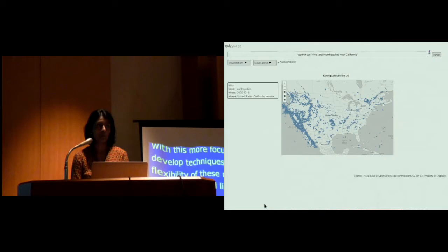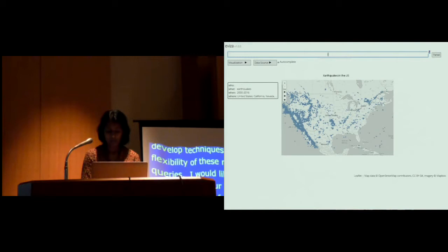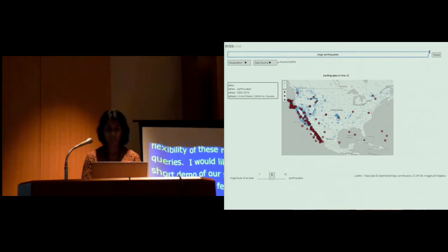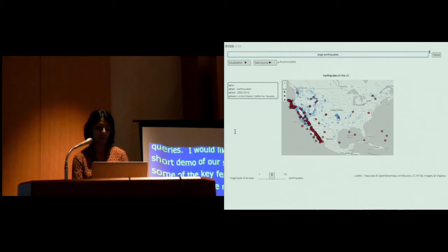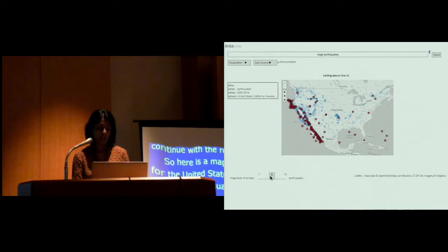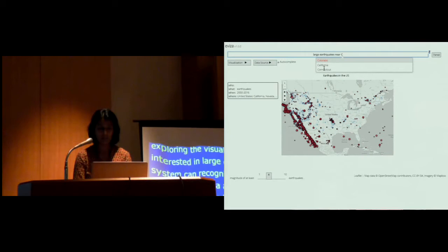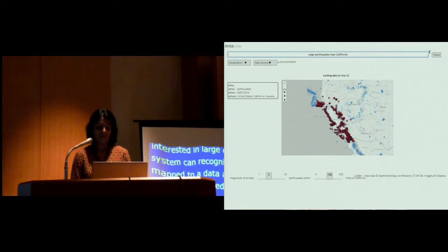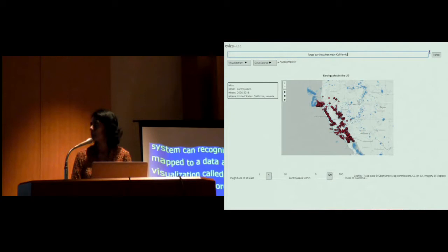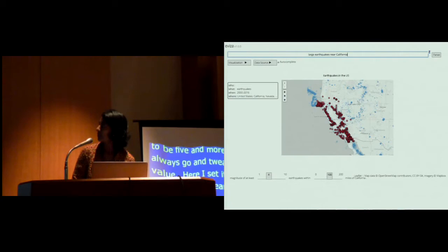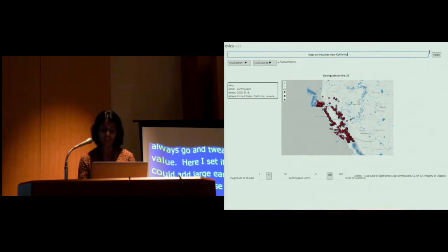So here is a map of earthquake data for the United States, and let's start by exploring the visualization. So I'm interested in large earthquakes. The system can recognize that large is mapped to a data attribute in the visualization called magnitude and sets it to be five and more. As a user, I can always go and tweak that to a different value. Here I set it to four.